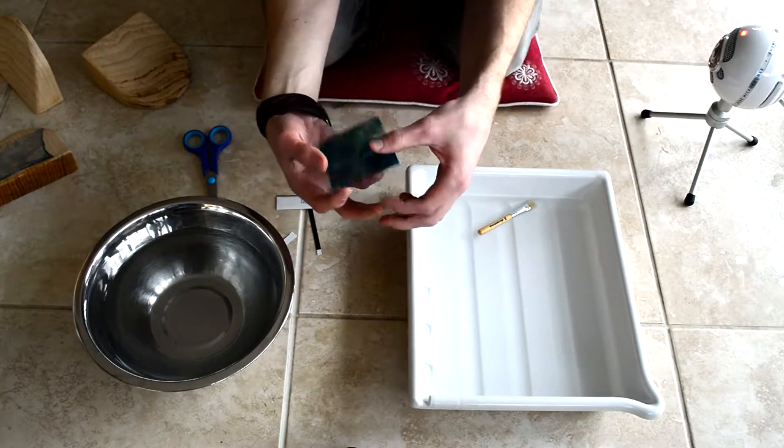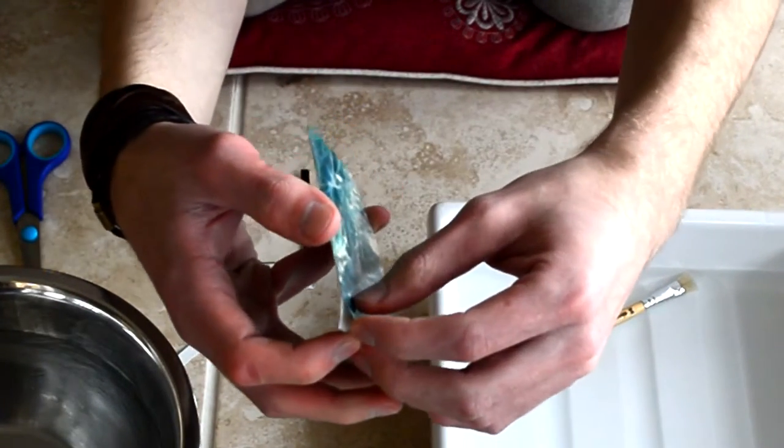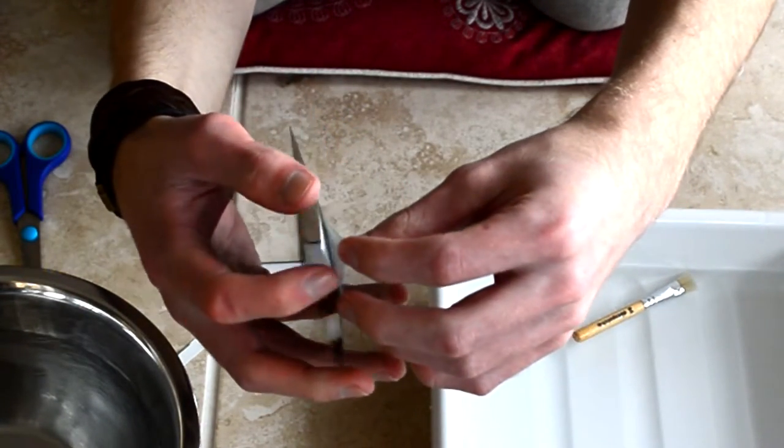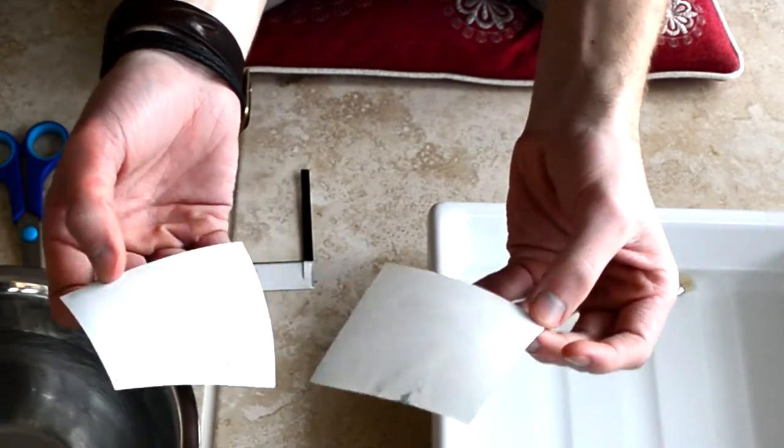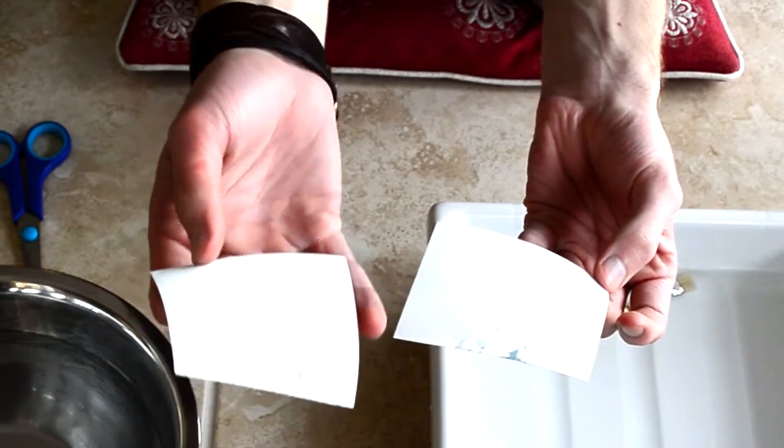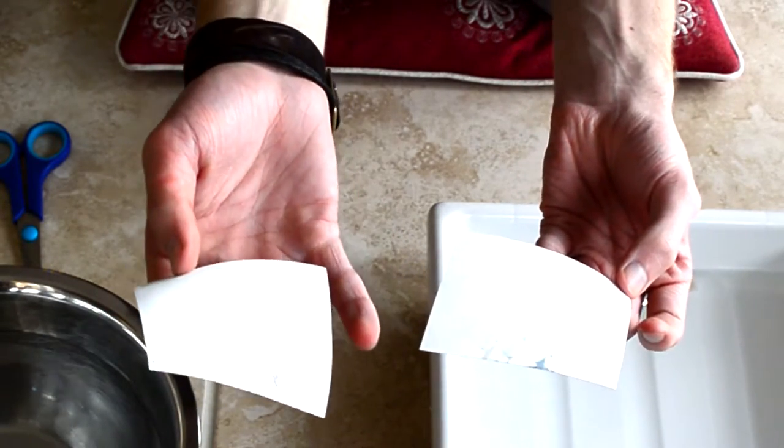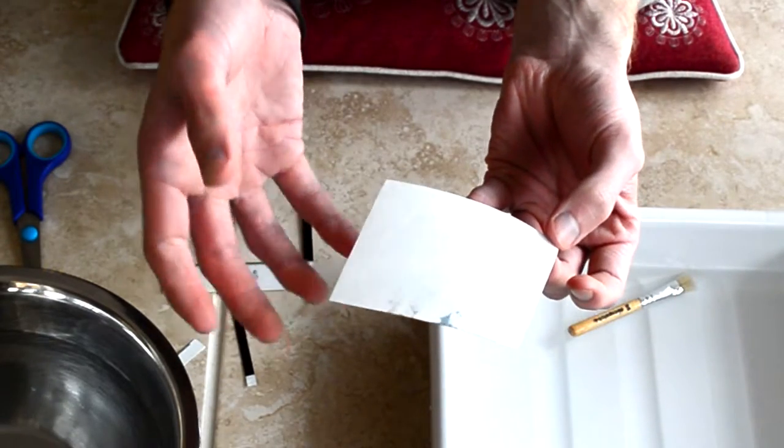So what you want to do to do a proper transfer is peel away this backing. This comes away quite easily. This is just the backing of it. There's all sorts of chemicals on this. So please take care. Wash your hands afterwards. Don't get it in your eyes. Just take care. This is chemistry you're working with, remember.